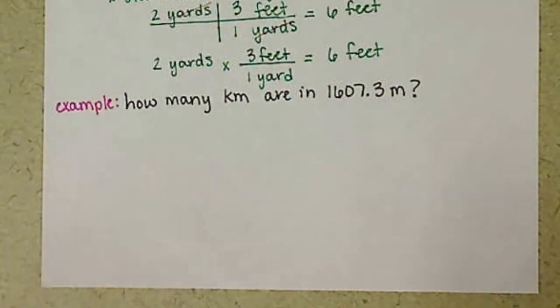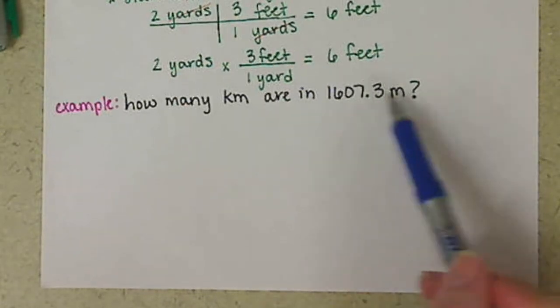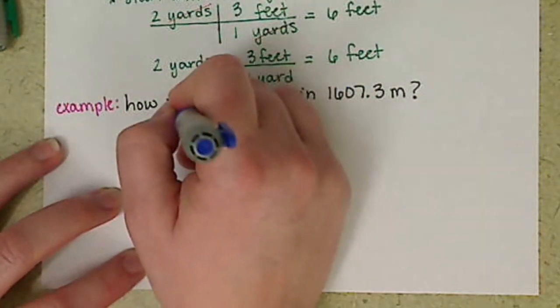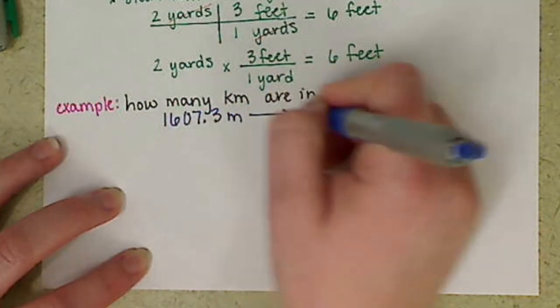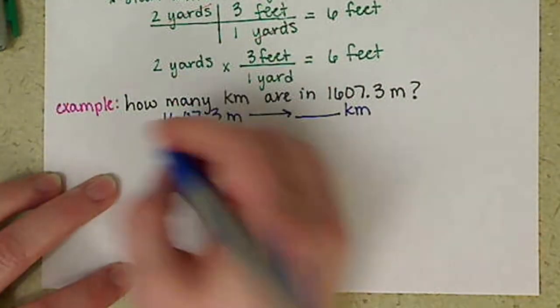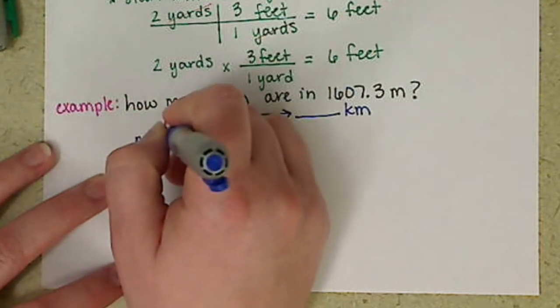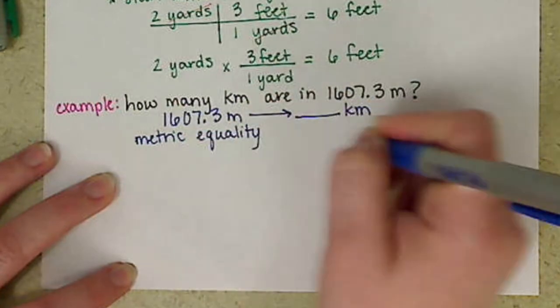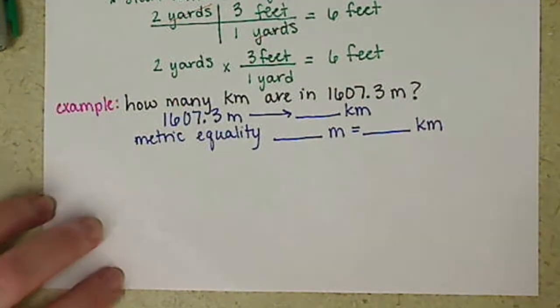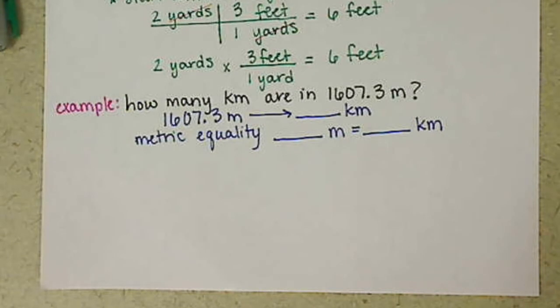Let's do another example. How many kilometers are in 1607.3 meters? In this case, we're converting between our metric units. We want to start with our 1607.3 meters and convert this to figure out how many kilometers that is. We need our metric equality between meters and kilometers.